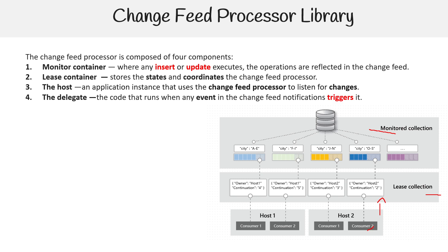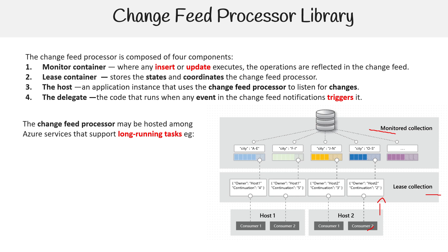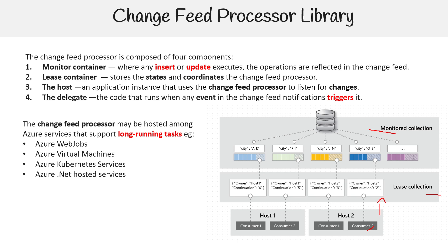That's the code within the consumer. The change feed processor may be hosted among Azure services that support long-running tasks, such as Azure Web Jobs, Azure Virtual Machines, Azure Kubernetes Service, and Azure .NET hosted services. They have C# code examples, but it's not super exciting. You just want to know about this feature. Again, it's not unique to Cosmos DB, but it is a common thing you should know about for these kinds of fully managed databases.